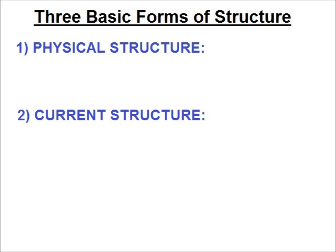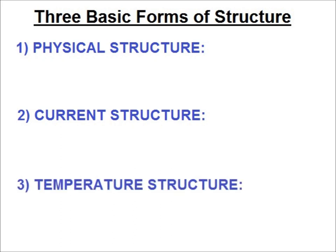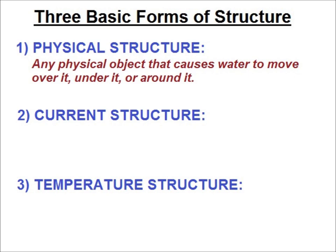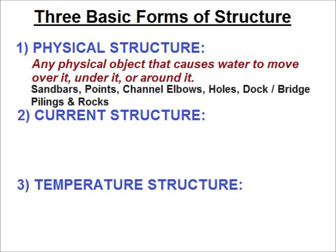Physical structure is exactly that — it's any form of physical object that causes water to move over it, under it, or around it, or simply surround it. Examples of physical structure are sandbars, points, channel elbows, holes, dock and bridge pilings, and rocks. There are others, but you get the idea.